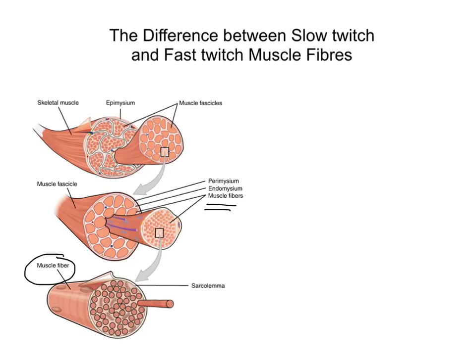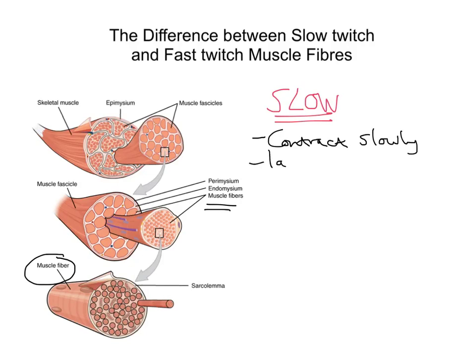Skeletal muscle is made up of really two types of muscle fibres: slow twitch and fast twitch. Different muscles have different proportions of slow and fast twitch fibres, and they have different properties. We're going to look at the slow twitch fibres first.